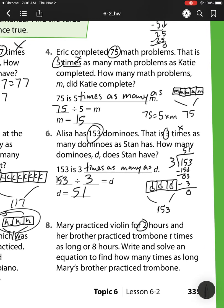Number 8, Mary practiced violin for two hours. So I'm going to show this as two hours and Mary. And her brother practiced the trombone for T times as long, or eight hours. So that means her brother needs to have eight hours. So that would be two, four, six, eight.